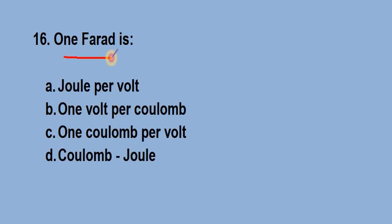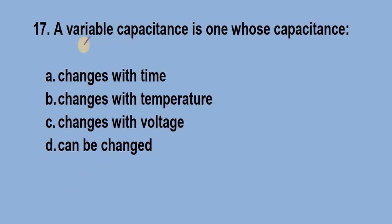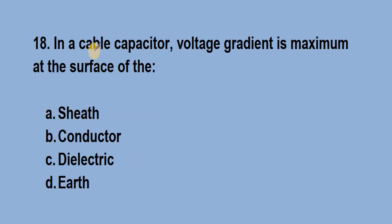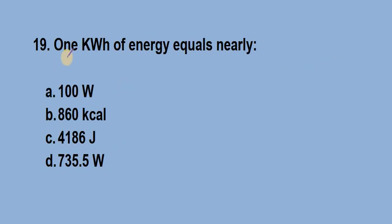Question number 16: One farad is? Answer is option C, 1 Coulomb per volt, that is C equal to Q by V. Question number 17: A variable capacitance is one whose capacitance? Answer is option D, can be changed. Question number 18: In a cable capacitor, voltage gradient is maximum at the surface of? Answer is option B, conductor.